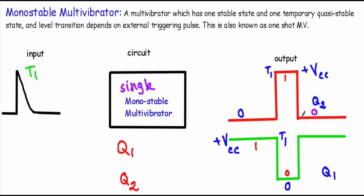The output will remain at plus VCC as long as the pulse T1 is applied; after that it will automatically come from one to logic zero and stay at this level unless we apply another triggering pulse. So zero is its stable state, and temporarily it seems that logic one is also stable due to the application of pulse T1, but this is not its stable state — therefore it is known as the quasi-stable state, or temporary quasi-stable state. This is also known as a one-shot multivibrator because we apply a single triggering pulse to control its operation.